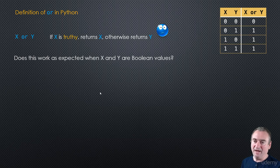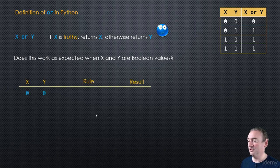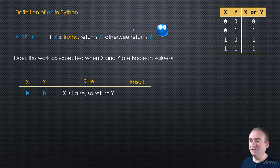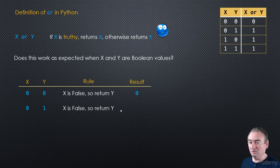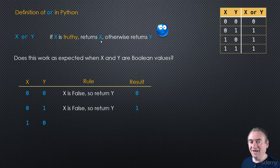Does this work as expected with just Boolean values? Let's run through the different options. If x and y are both false, x is false so we return y, which is also false — that matches. If x is false and y is true, we still return y, so we return 1 — matches again. If x is true and y is false, x is true so we return x, which is 1 — still matches. And if both are true, x is true so we return x, which is true — matches our truth table.